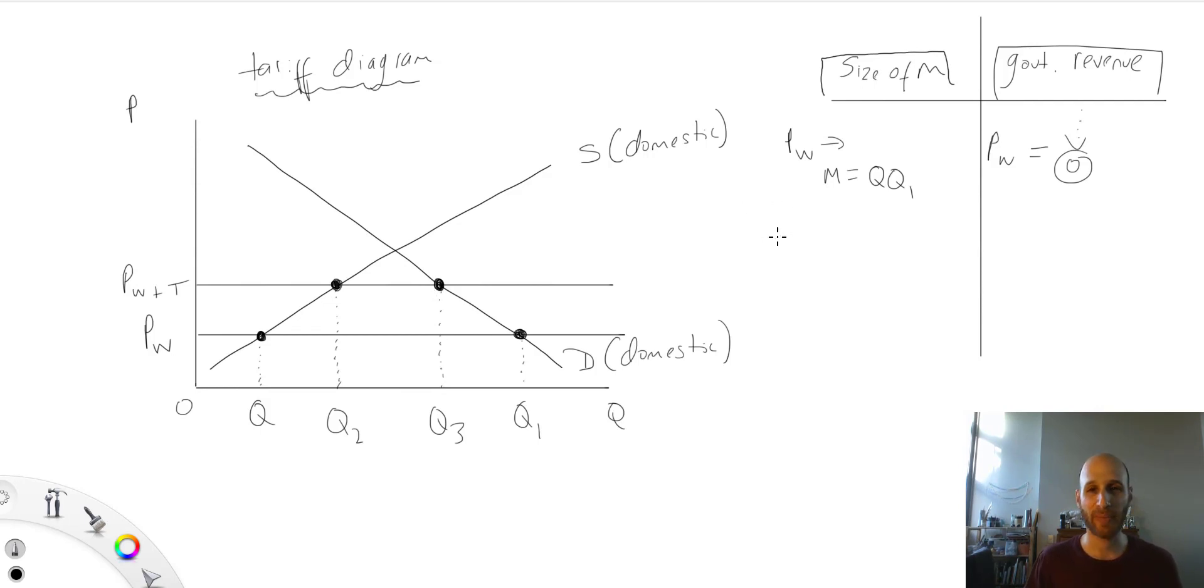So now I'm thinking, so now I'm at Pw plus T. So the size of imports at Pw plus T is going to be this distance, right here, or this area, right here.